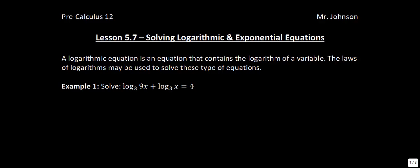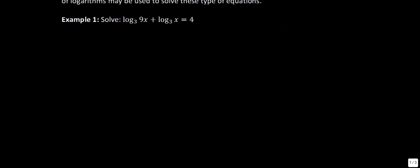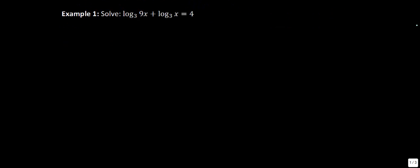Let's get started with Example 1: solve log base 3 of 9x plus log base 3 of x, and that is equal to 4. Because we have the same base, we know that when we add those logarithms together it's the same as writing a single log of base 3 — we can just multiply them. I'm using the product law like so.